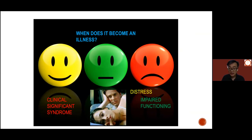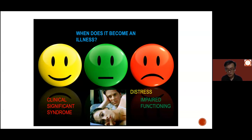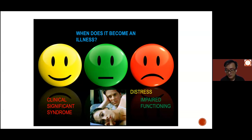When things become an illness, particularly in mental health, there are generally three key features. First, there's a set of symptoms — things you report when feeling unwell. There's usually more than one symptom to qualify as an illness. Second, you have distress — you feel very unwell and uneasy, and something needs to be done. Finally, you have limited capacity to carry out day-to-day life, whether in studies, work, or social relationships.